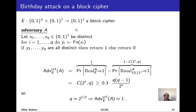We compute the advantage by subtracting those two probabilities, leaving us with a simple elegant formula: the PRF advantage of our adversary is exactly the collision probability for throwing Q balls into 2 to the L bins. Applying the birthday bound, this is lower bounded by 30% of Q times Q minus 1 over 2 to the L. Once Q starts hitting 2 to the power half of L, this starts getting very close to 1. So our conclusion is that if you make a number of queries which is 2 to the power half of the block size, the PRF advantage of this adversary becomes very significant.